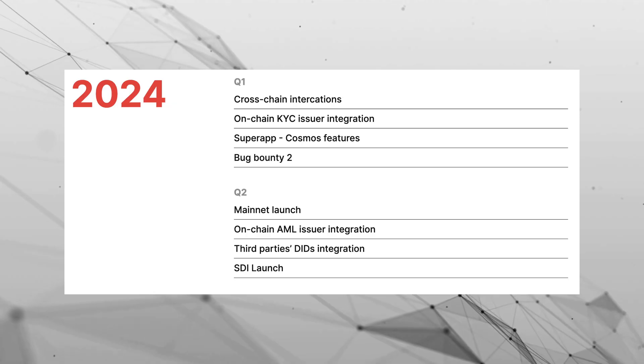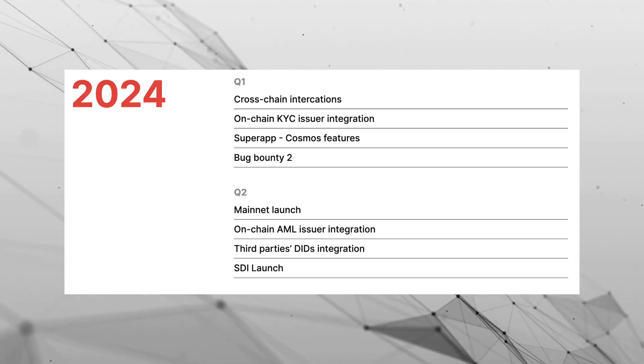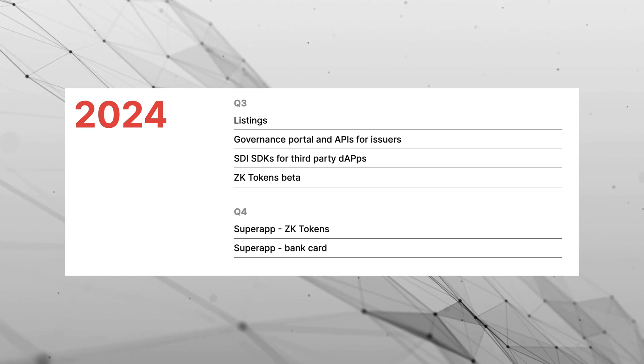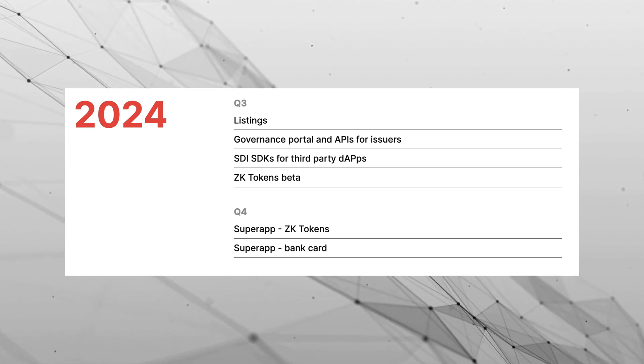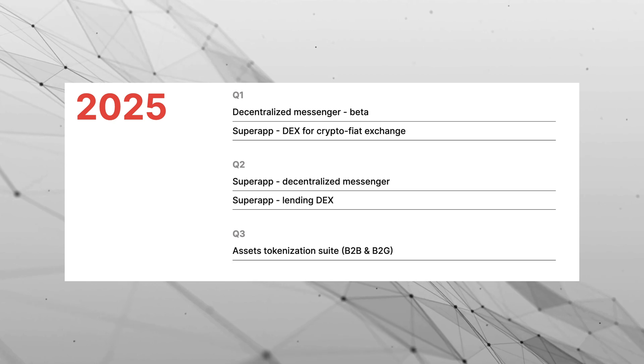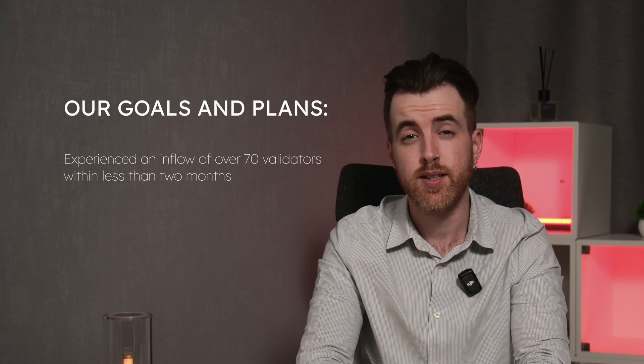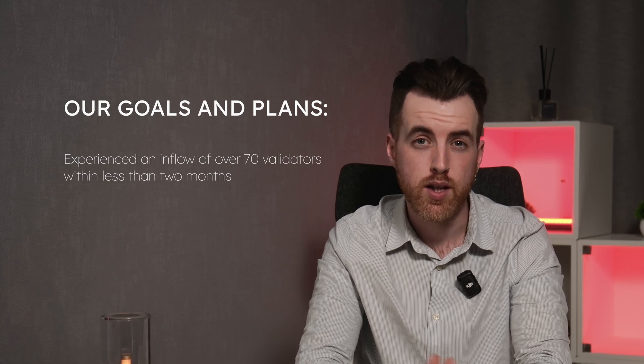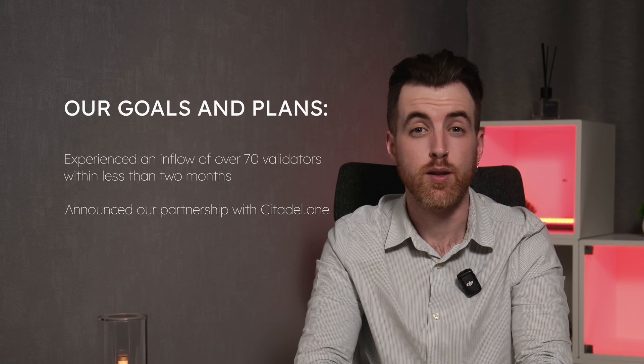From safeguarding validator hardware to empowering users with control over their data and simplifying access to decentralised applications, SwissTronic is not just building a blockchain — it's crafting the backbone for the next digital wave. Our roadmap is paved with security enhancements and a dedication to user autonomy. We continue to focus on expanding the SwissTronic ecosystem through networking and collaborations. For instance, we've experienced an inflow of over 70 validators within less than two months, and we've recently announced our partnership with Citadel One.